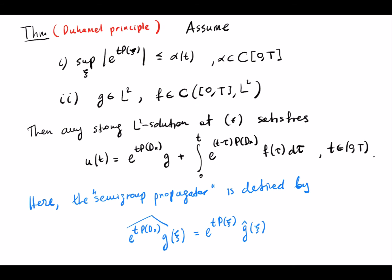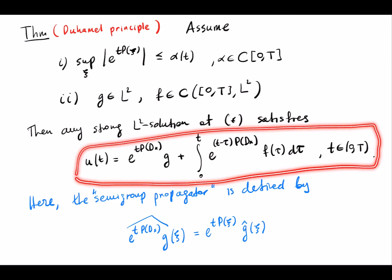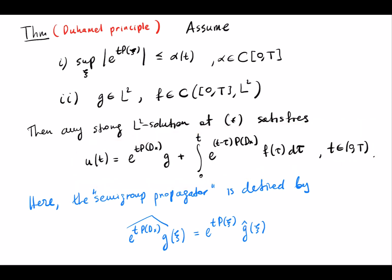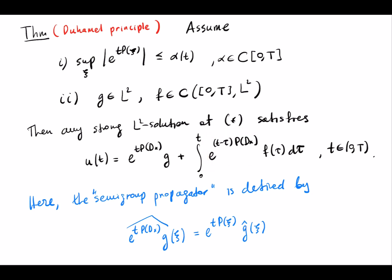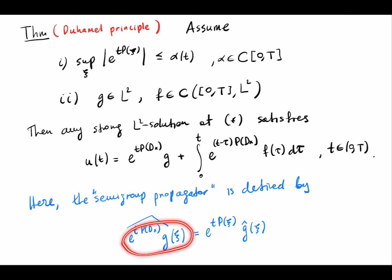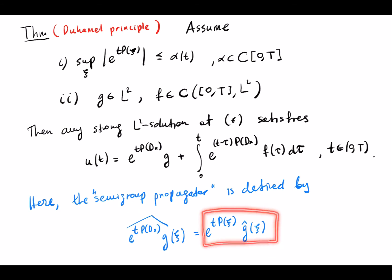Then the principle says that any strong L^2 solution satisfies this formula — the analog of the ODE formula — where this integral is interpreted as an L^2-valued integral. Here, the propagator is the inverse Fourier transform of those matrix exponentials, sometimes called a semi-group propagator; its Fourier transform is just the matrix exponential applied pointwise in Fourier space.